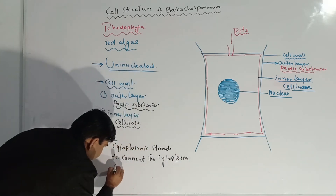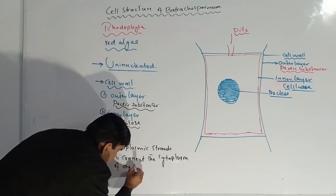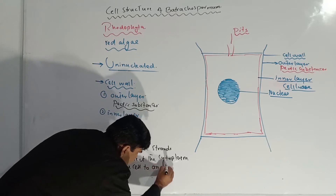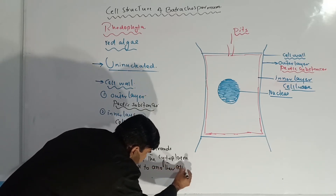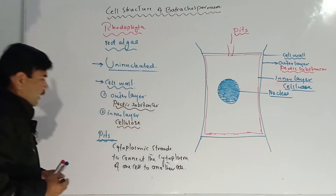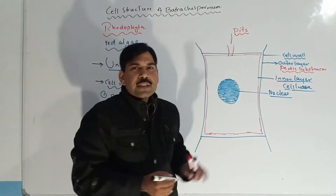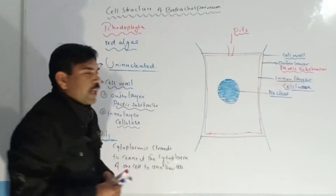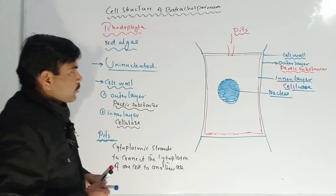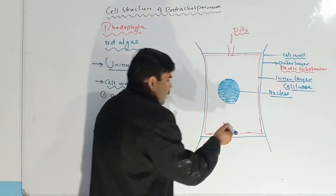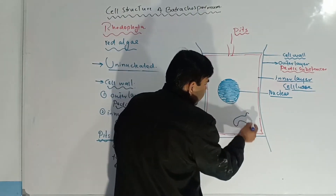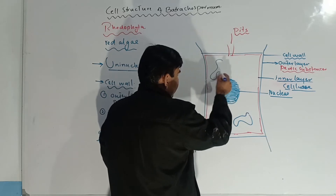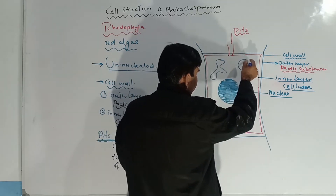Such type of structures are known as pits. Now we are going to discuss about some other irregular structures that are present. The shape of these structures is non-regular.